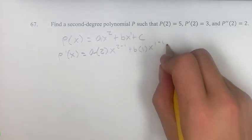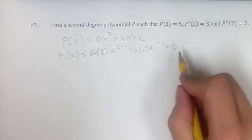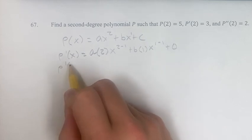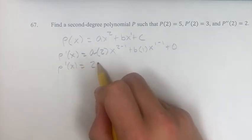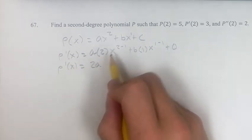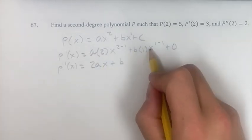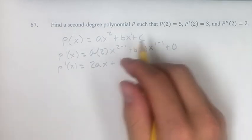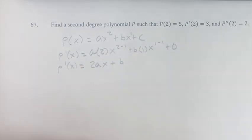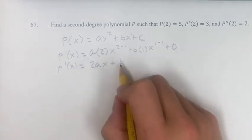Derivative of a constant is 0, so plus 0, which gives us the derivative of X is equal to 2AX to the 2 minus 1 is X to the first power, which is just X, plus B, B times 1 is B, times X to the 1 minus 1 is X to the 0. So X to the 0, anything to the 0th power is just 1, so this is B times 1, which is just B.